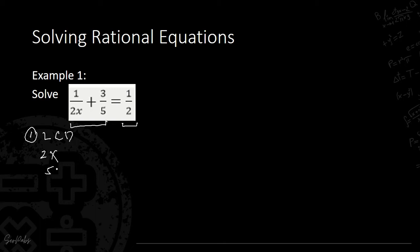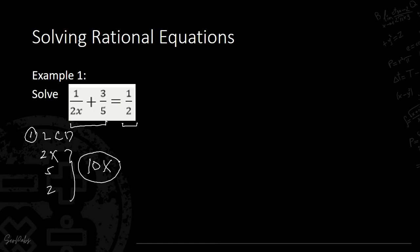We list our three denominators: 2x, 5, and 2. The LCD is the lowest number that can be divided exactly by all three denominators. The lowest number divisible by both 5 and 2 is 10. Since we also have x present, we include x in our LCD. Therefore, our LCD is 10x.